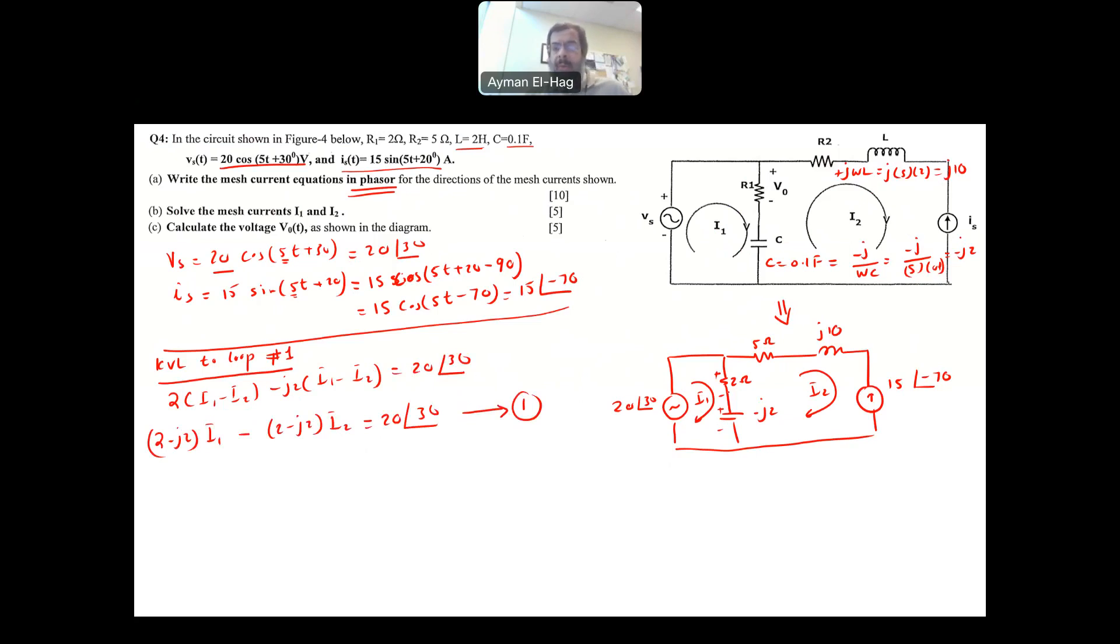This is my first mesh equation. Now we'll go to loop number 2, and loop number 2, we have a current source. When we have a current source, we do not apply KVL. Why is that? Because we don't know the voltage here across the current source, so we have to assign another variable. So you will be adding an equation with another variable, so you are complicating your problem. Instead, when we look to this branch, the current is going in that direction, which is opposite of the current source. So from loop number 2, your I2 equals minus 15 angle of minus 70 amps. So this is basically the information we can get from loop number 2.